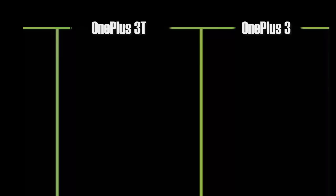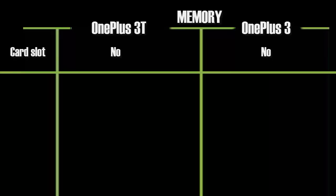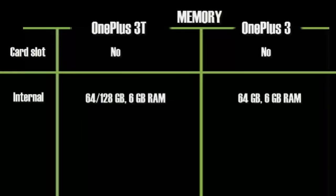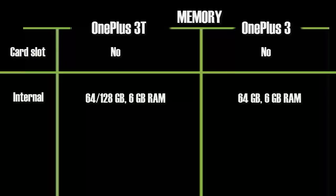Talking about memory, the OnePlus 3 and OnePlus 3T both do not have any external microSD card support. The OnePlus 3T comes in two variants: 64GB and 128GB, both coupled with 6GB of RAM. The OnePlus 3 comes in only a single variant of 64GB with 6GB of RAM.